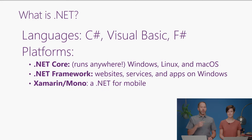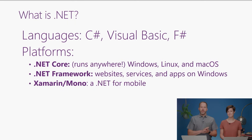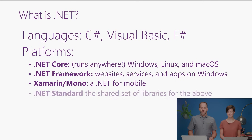Then Xamarin or Mono, which is .NET for mobile. So you can write your .NET applications on an iOS device, or an Apple Watch, or an Apple TV, or Android. All of this together is examples of .NET. These are multiple .NETs, and that can be a little confusing itself.